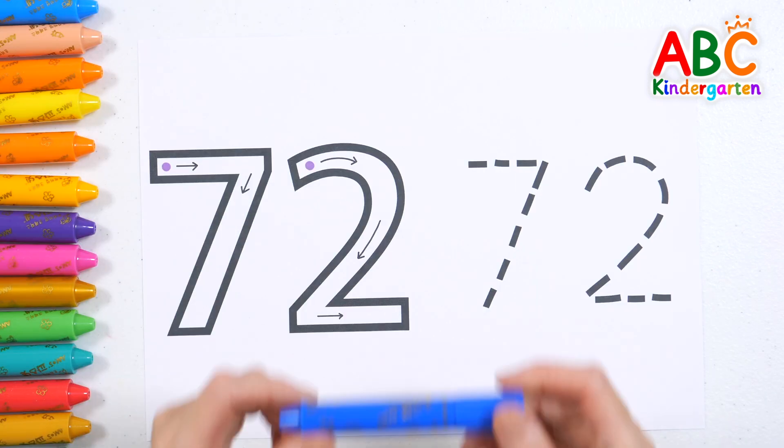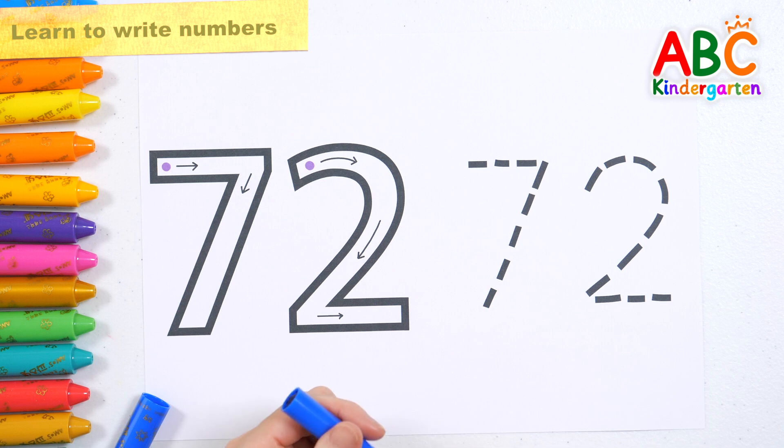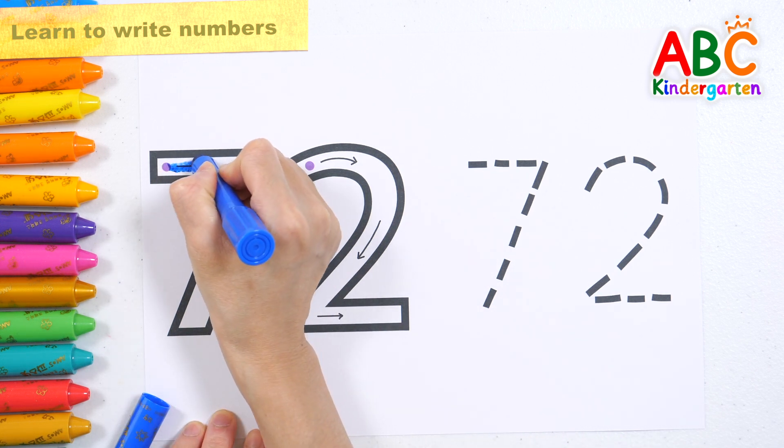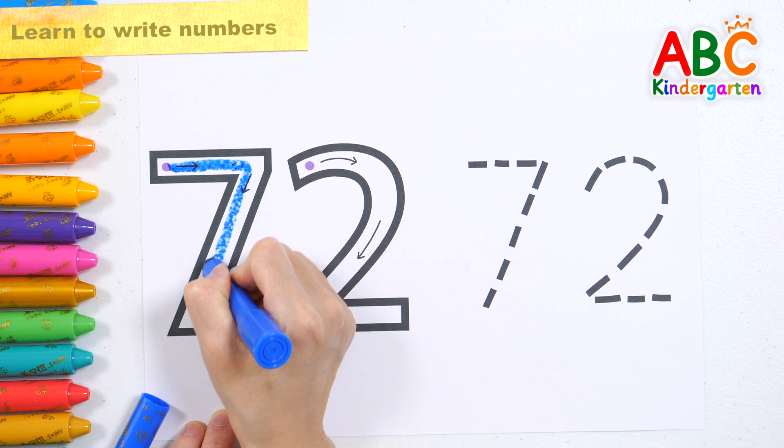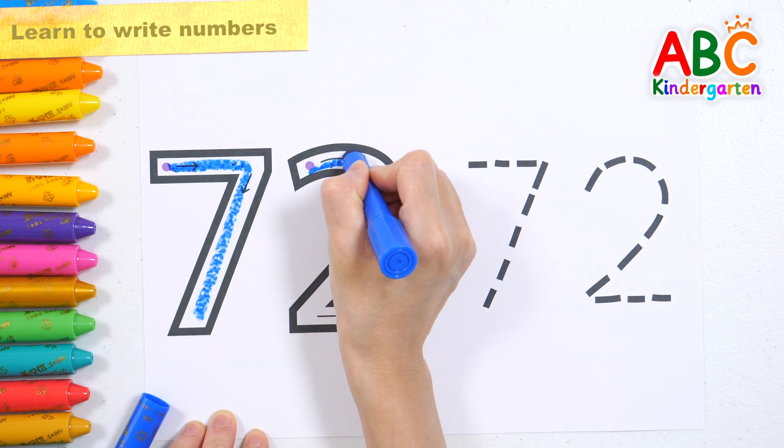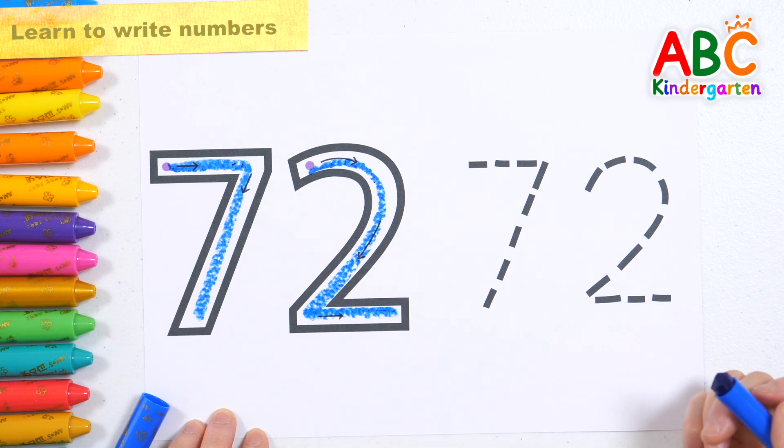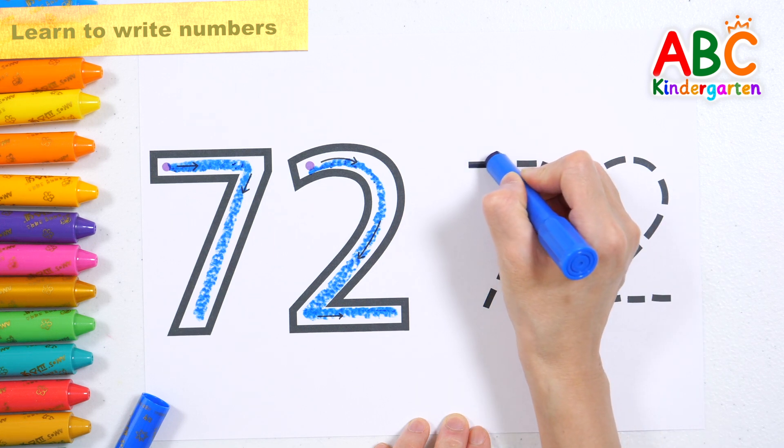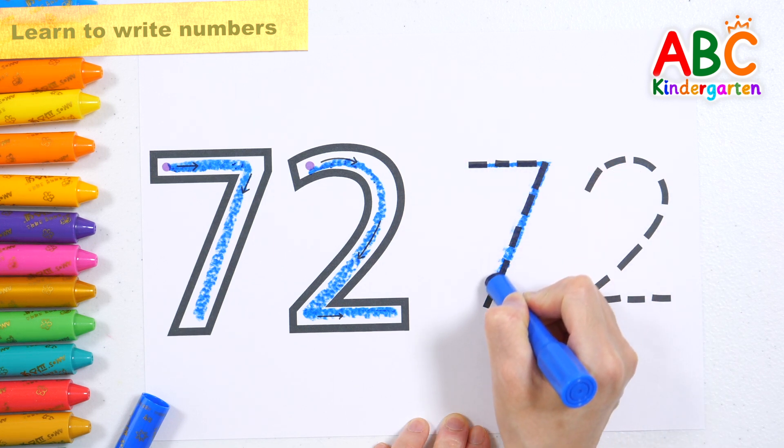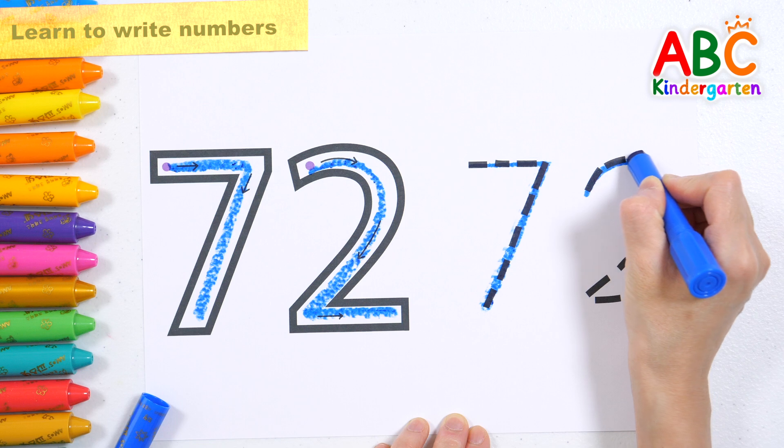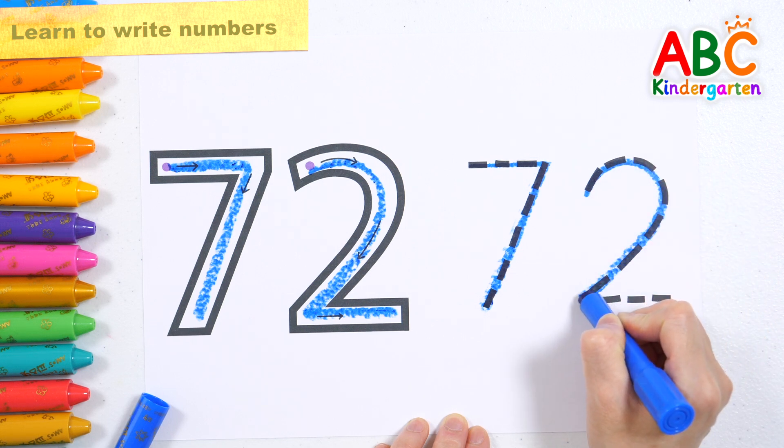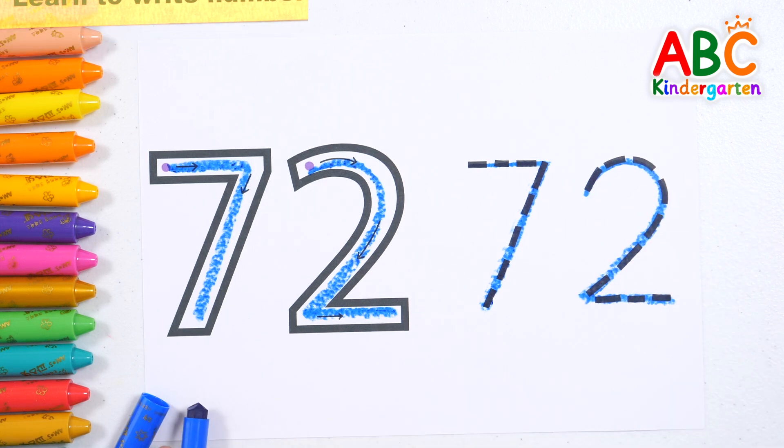71. Learn how to write the number 72. Starting from the purple, slowly write the numbers in the direction of the arrow. 72. Shall we write the number 72 again? 72. Good job!